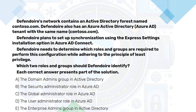Our network contains an Active Directory. We also have an Azure Active Directory tenant with the same name. We plan to set up synchronization using the express settings installation option in Azure Active Directory Connect. We need to determine which roles and groups are required to perform this configuration while adhering to the principle of least privilege. Which two roles and groups should we identify?